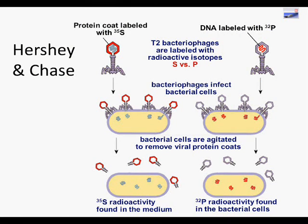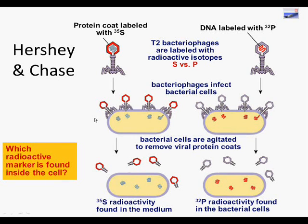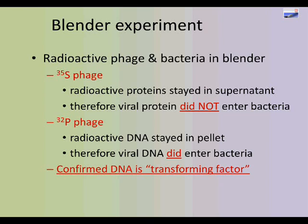The bacteriophage had a protein coat on the outside where the radioactive sulfur would be found, while the radioactive phosphorus was inside where we knew the genetic material was. They let the bacteriophage inject the cells, then removed the phages from the outside surface and looked at what was found inside the bacteria — sulfur or phosphorus? The picture gives you the conclusion: it was the phosphorus inside. The sulfur did not enter the bacteria; it stayed outside. This confirmed that viral genetic information was carried in the DNA.